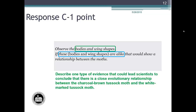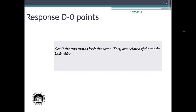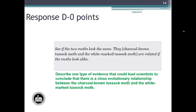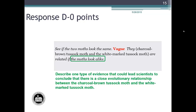Next we will look at student response D. Response D reads: See if the two moths look the same. They are related if the moths look alike. We are looking for two parts of a complete description. The method references the moths' physical characteristics, but 'look the same' does not point to a specific physical characteristic — the response is too vague to earn credit. The combination does not fit within the parameters of the rubric. Response D is an example of a student response that would earn zero points.